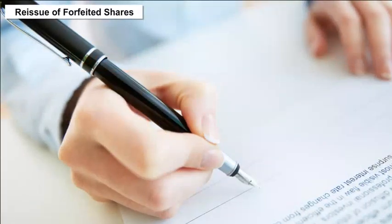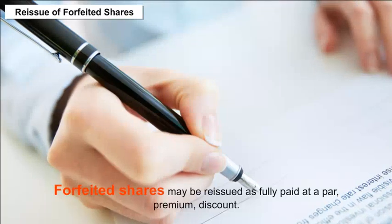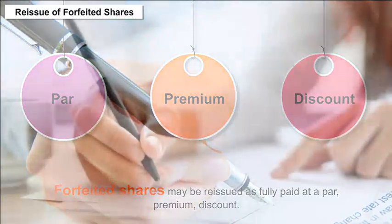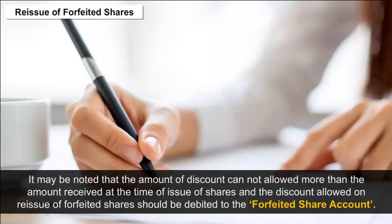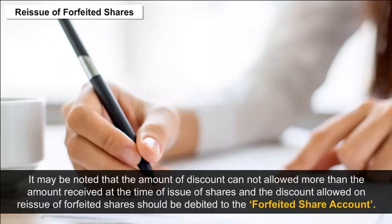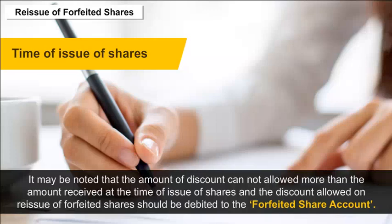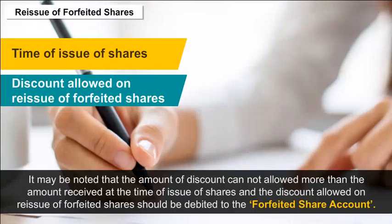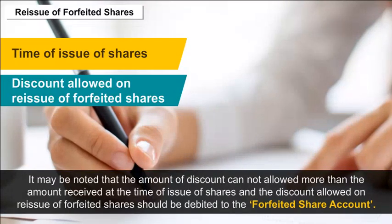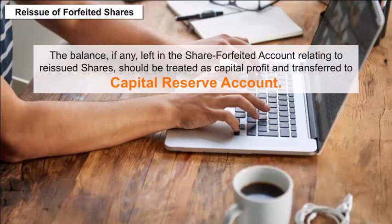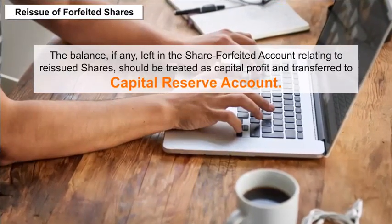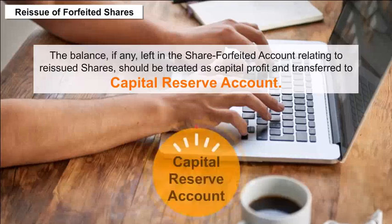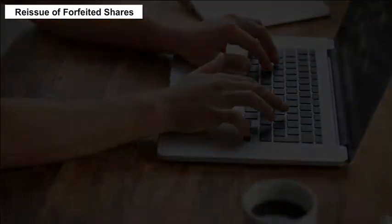Reissue of Forfeited Shares: Forfeited shares may be reissued as fully paid at par, at premium, or at discount. However, the amount of discount cannot exceed the amount received at the time of original issue of shares. The discount allowed on reissue of forfeited shares should be debited to the forfeited share account. Any balance remaining in the share forfeited account relating to reissued shares should be treated as capital profit and transferred to the capital reserve account.